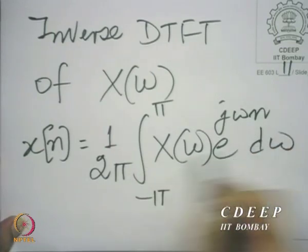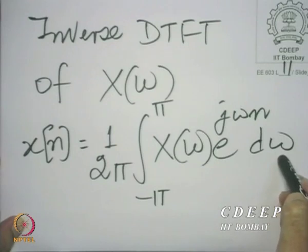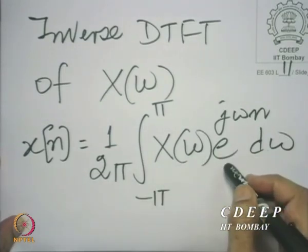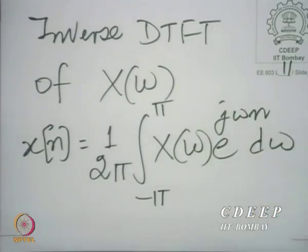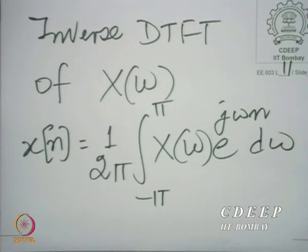The question is how could we talk of a unit vector in the context of e raised to the power j omega n, since e raised to the power j omega n does not have magnitude 1 and cannot be made to have magnitude 1. Let me clarify exactly what we are saying here. What we are saying is that when we use this idea of multiplying a component by a unit vector, it is of course true for a finite dimensional space, but here we are talking about an infinite dimensional space.